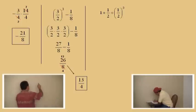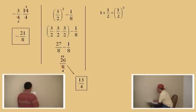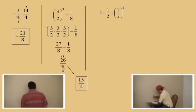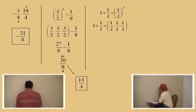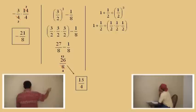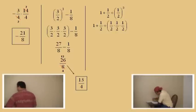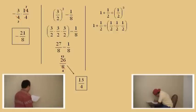Charlie, what does 1 half cubed mean? 1 half times 1 half times 1 half. And what does 1 half times 1 half times 1 half equal? 1 eighth. That's right, 1 eighth.